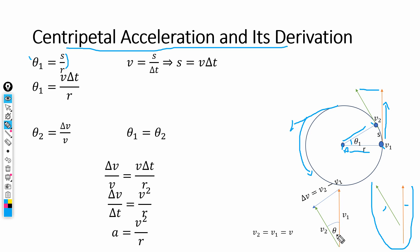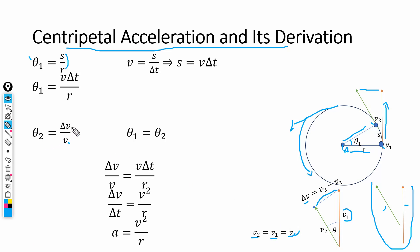For the second triangle, we define theta₂ = Δv / v, where Δv is the arc length analog and v is the speed. Since v2 = v1 in magnitude, we denote both as v. We can now compare the two triangles and conclude that theta₁ = theta₂, because the two triangles are geometrically similar.